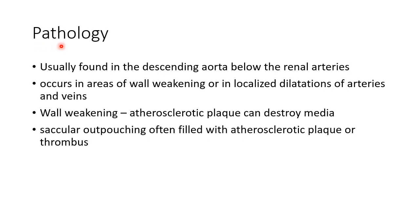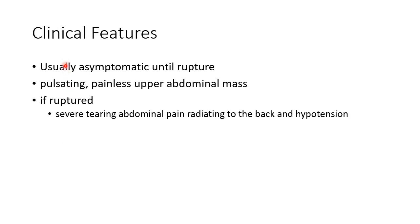Now let us see about the pathology of aneurysm. Atherosclerotic aneurysm is usually found in the descending aorta below the renal arteries. It occurs in areas of wall weakening or in localized dilatations of arteries and veins. The wall weakening is due to atherosclerotic plaque destroying the tunica media. Saccular outpouching, often filled with atherosclerotic plaque or thrombus, is the pathological feature of aneurysm.